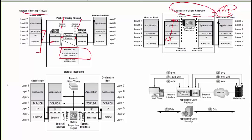Within F5 BIG-IP, different functions require different modules. For load balancing only, you use LTM. For application policy and application-level security, you need different modules such as ASM and APM.